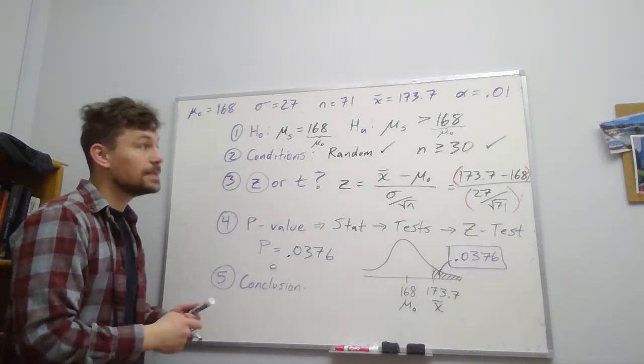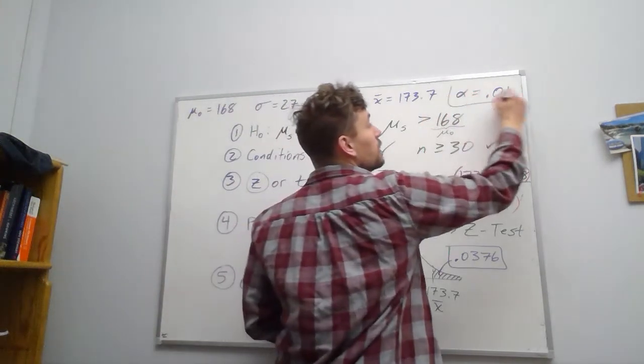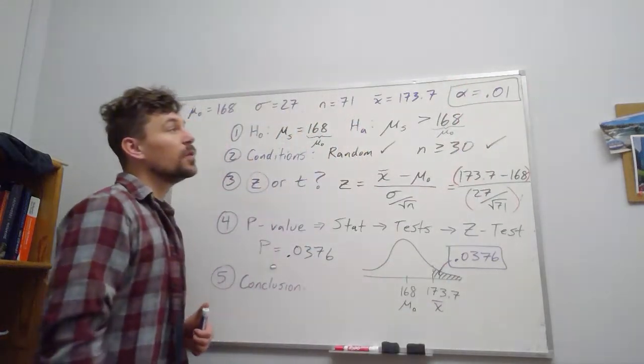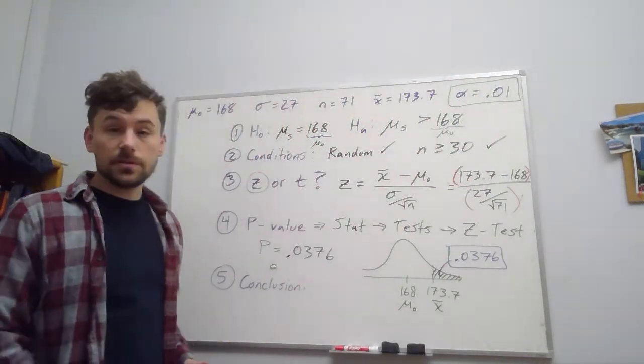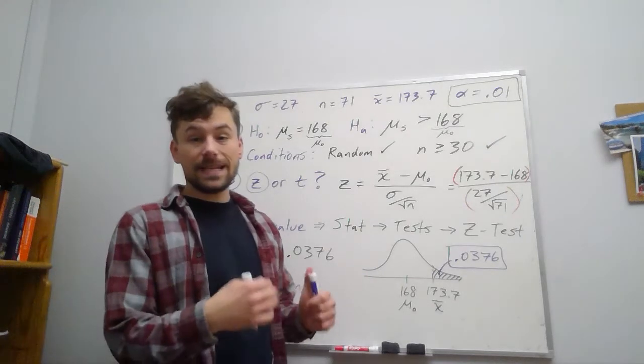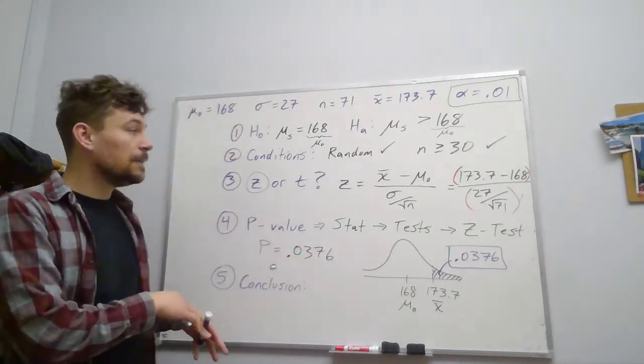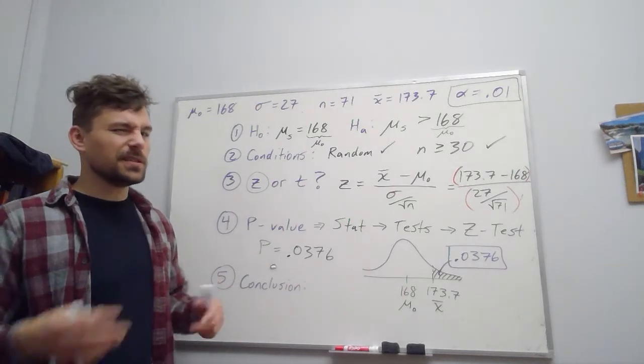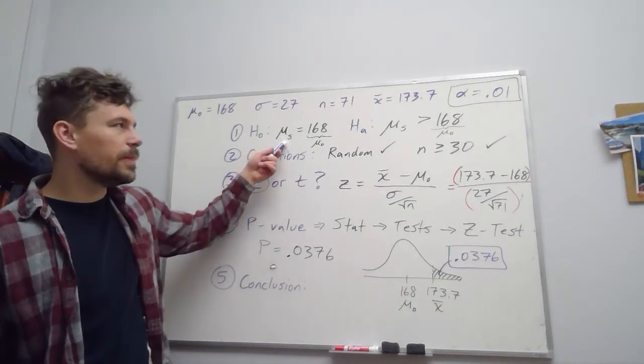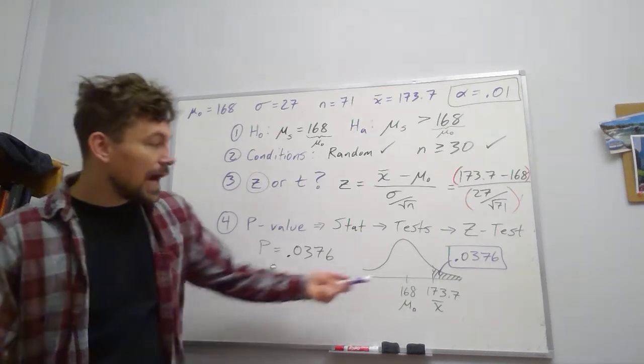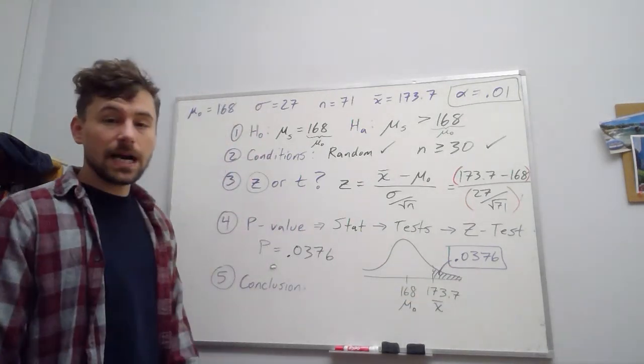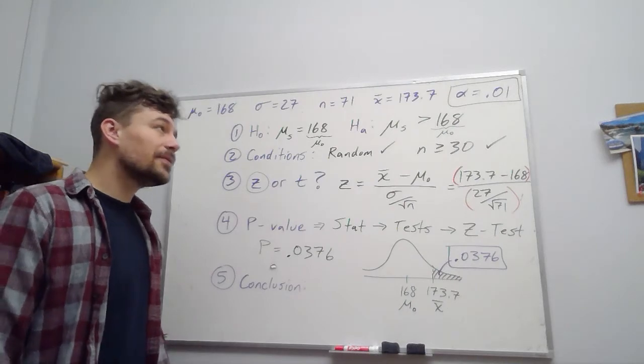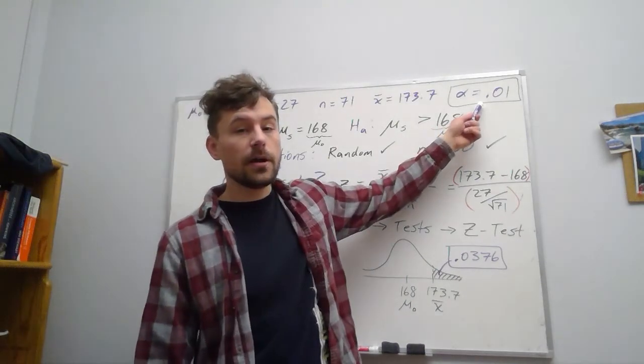Well, that depends on our alpha level. So at the beginning of the problem, we set up α = 0.01. So we have to have results that only occur 1% of the time or less in order to be suspicious and think something, something's wrong with my assumption. Well, our results, while they are rare, 3.76% of the time, yeah, they're not quite rare enough for our cutoff.